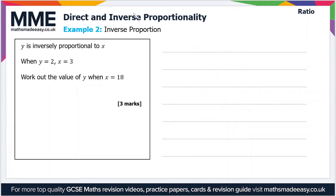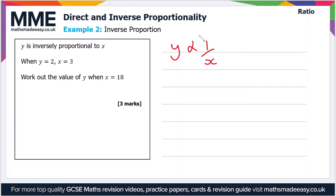Moving on to the second example — this is inverse proportion. Y is inversely proportional to x; when y equals 2, x equals 3 — work out the value of y when x equals 18. We set up our relationship: this time y is proportional to 1 over x because it's inverse proportionality, or y equals k over x.